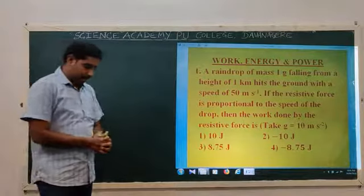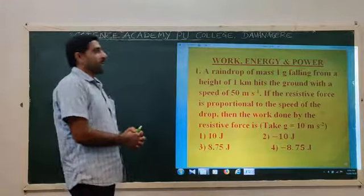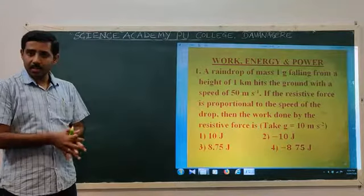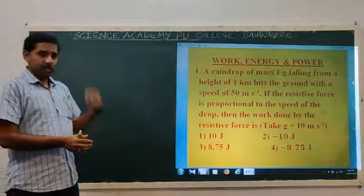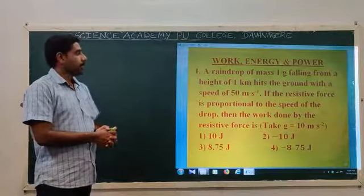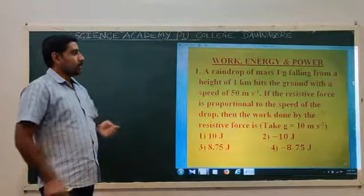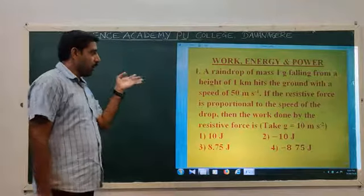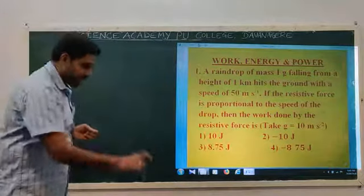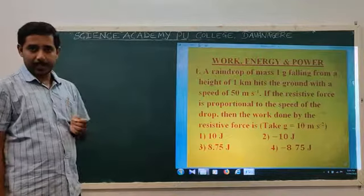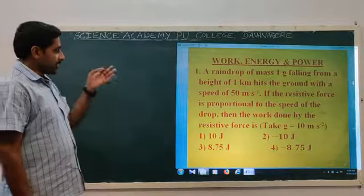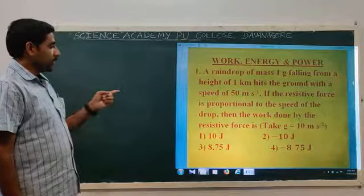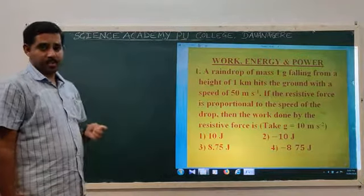Dear students, we will discuss questions about power and energy from last period. A raindrop of mass 1 gram falling from a height of 1 kilometer hits the ground with a speed of 50 meters per second. If the resistive force is proportional to the speed of the drop, then the work done by the resistive force is?